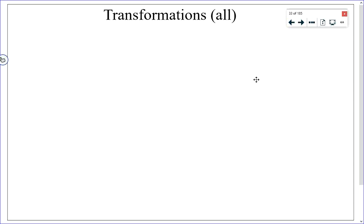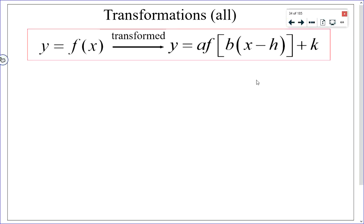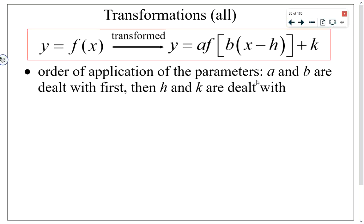Putting it all together — except for the inverse reflection — the full transformation template from your formula sheet is y equals a times f(b(x minus h)) plus k. Everything about h and k still holds. The parameter a introduces a vertical reflection if negative, and the vertical stretch factor is the absolute value of a. If b is negative, there's a horizontal reflection across the y-axis. You must handle a and b before h and k when applying transformations.